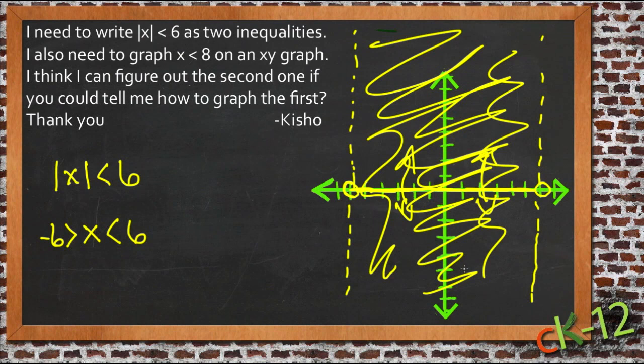To show that no matter what y is, as long as x is less negative than negative six and less positive than positive six, it's okay. We don't care what y is because we didn't specify y. So hopefully then graphing that other one won't be too much of a difficulty for you there, Kisho, and hope that helps you out.